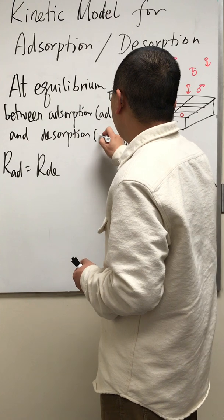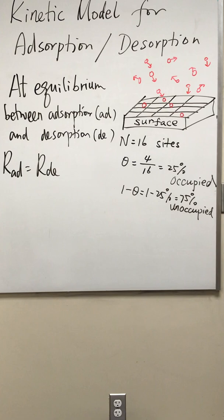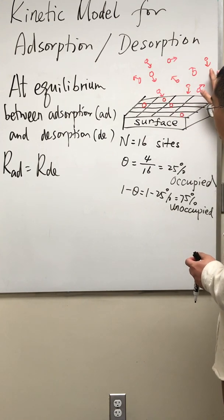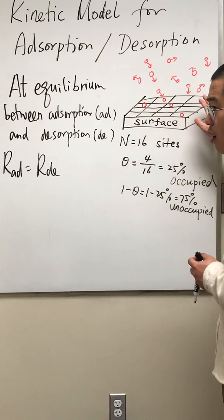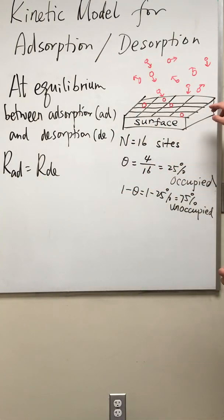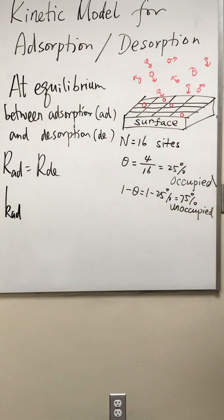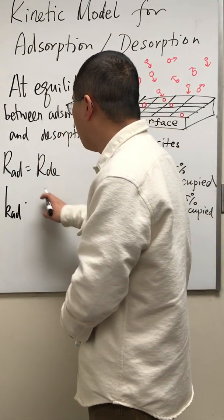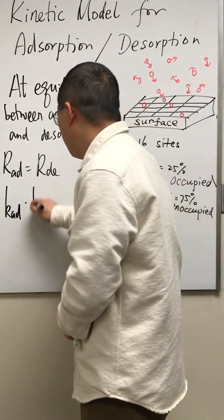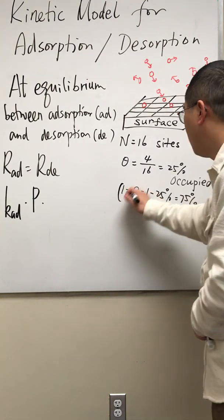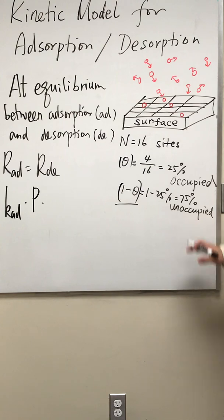I'm going to use AD for adsorption and DE for desorption. We know the adsorption rate is proportional to the pressure or concentration of the gas phase species. It's also proportional to the number of unoccupied sites because adsorption occurs between the unoccupied sites and the gas phase species. Therefore, I'm going to use a reaction rate constant here, K sub adsorption, times either the concentration or the pressure of the gas phase species, and commonly we use pressure P, times the number of unoccupied sites.